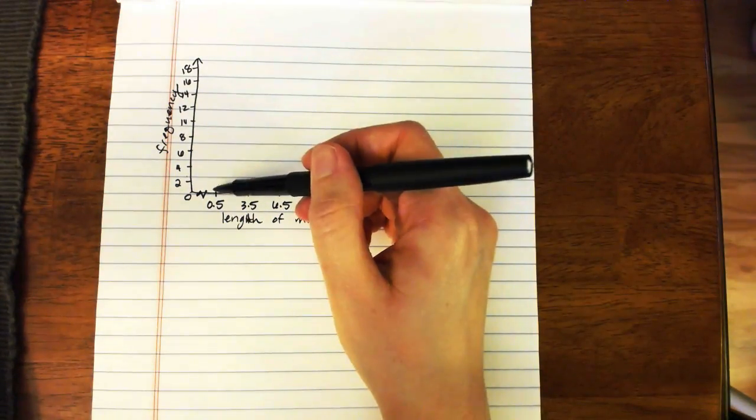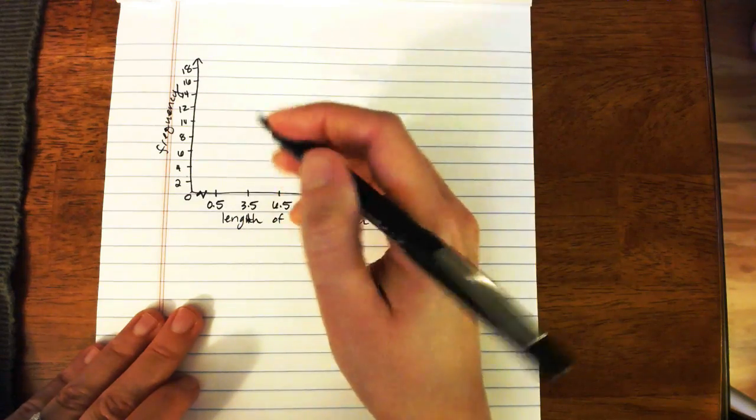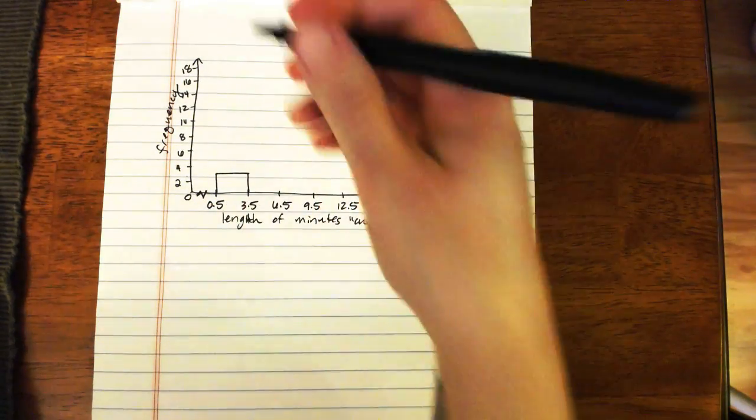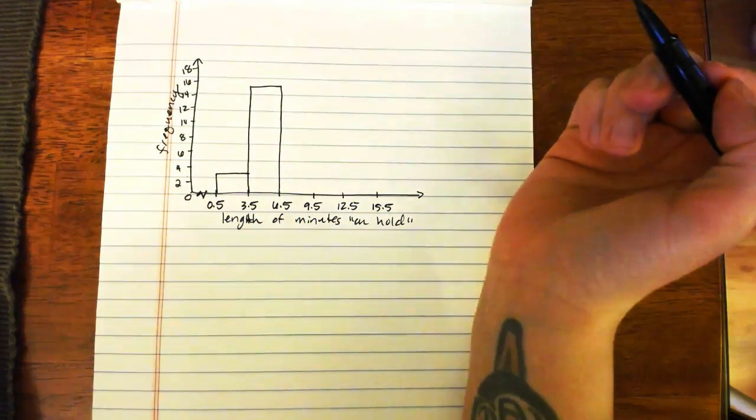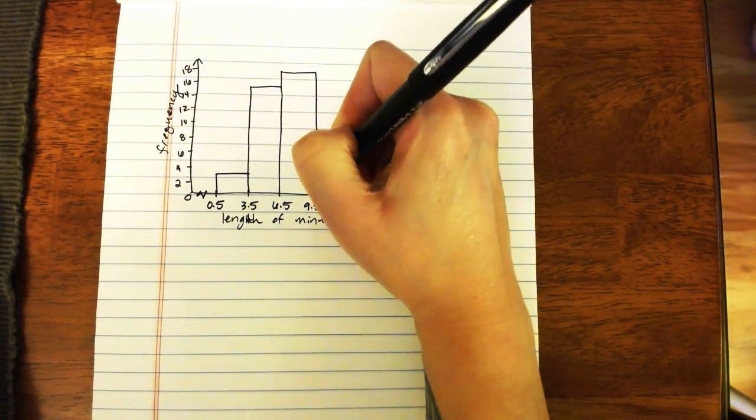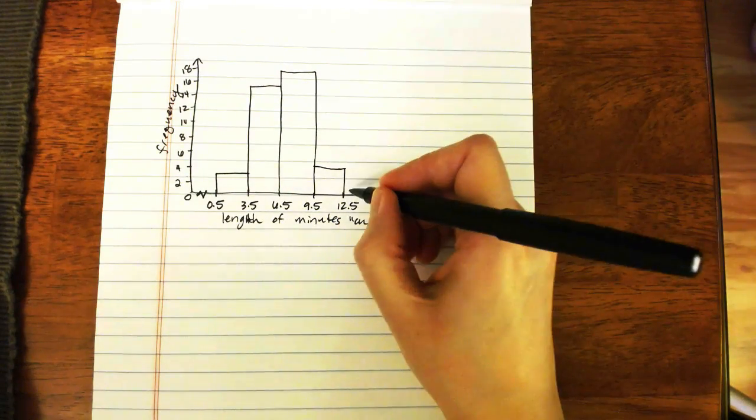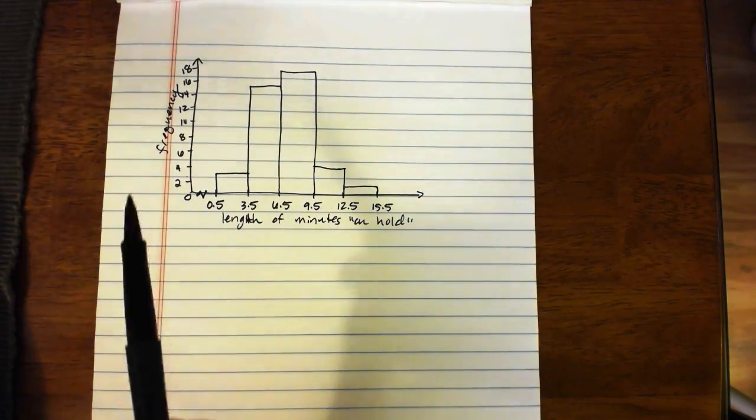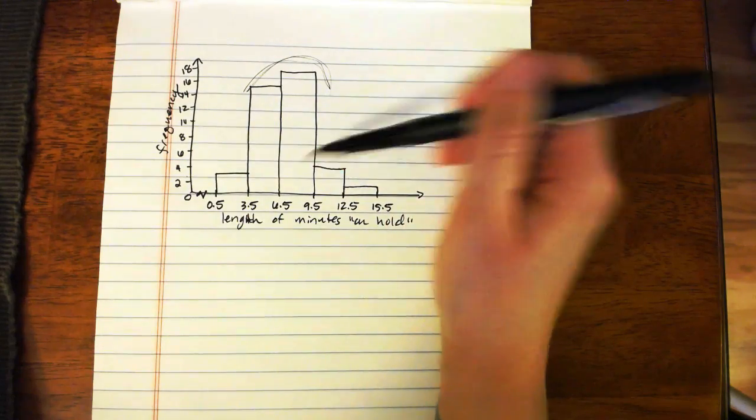And then basically, the height of the bar in each class is going to represent the frequency of data values in that class. So this first class that had boundaries of 0.5 to 3.5 had a frequency of 3. So that should be 3 units tall. Then from 3.5 to 6.5 was 15, so that should be 15 units tall. The next one, 6.5 to 9.5, that was the 17. Then the next one, 9.5 to 12.5, had a frequency of 4. And then the very last one had a frequency of 1. And so this would be our histogram. And it's a really nice graphical way to see how your data are distributed. We can see that these are the most popular classes here between 3.5 and 9.5, and that there's actually very little data on either side of that.